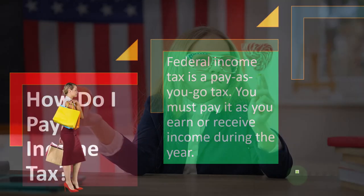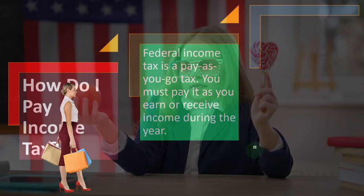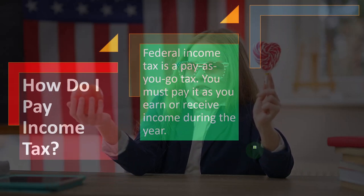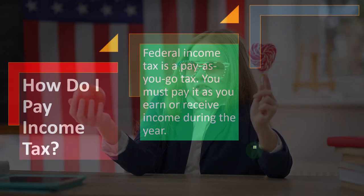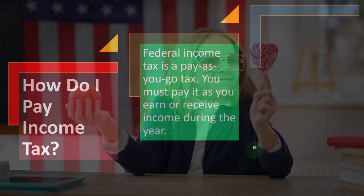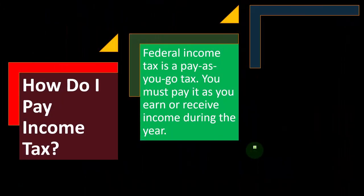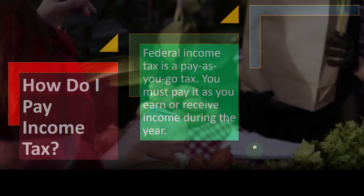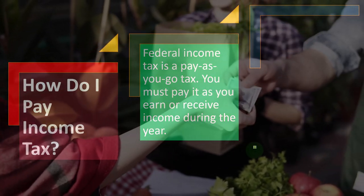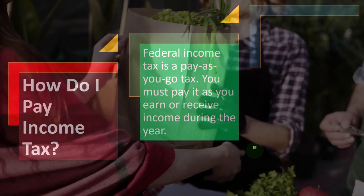It's a lot more difficult to figure that out than if you had a W-2 salaried situation where you know how much you're going to make. If I know I'm going to make $60,000 this year, I can figure out my taxes much more easily than if I have a sole proprietor business and have no idea how much I'm going to make — but I still need to make my estimated tax payments.